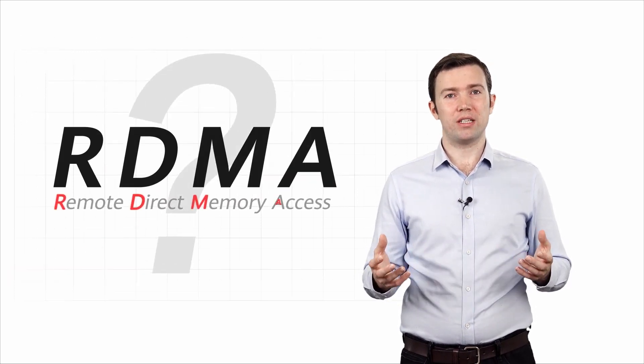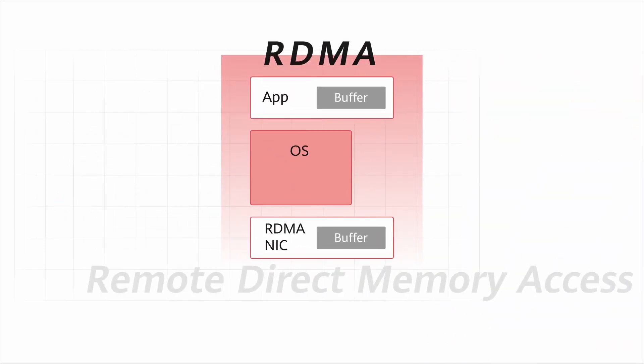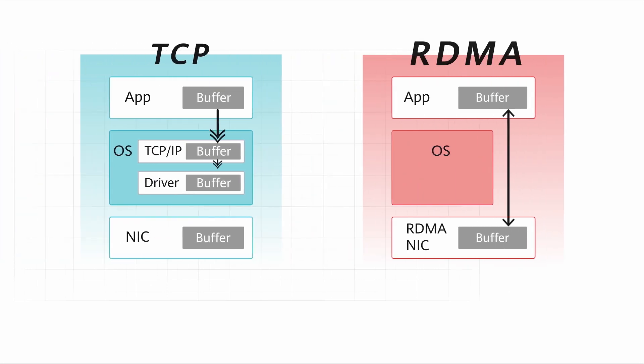So, what is RDMA? RDMA is short for Remote Direct Memory Access. It allows direct data read and write operations between applications and NICs. Improving on traditional TCP IP technology, RDMA reduces the protocol stack delay to as low as about one microsecond.